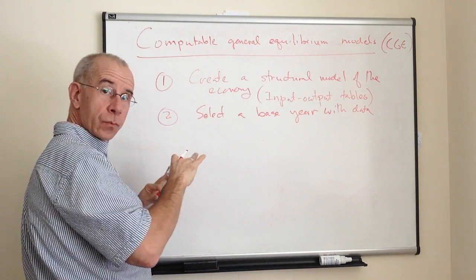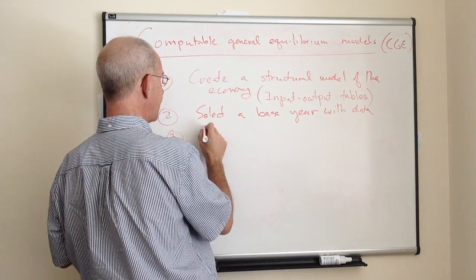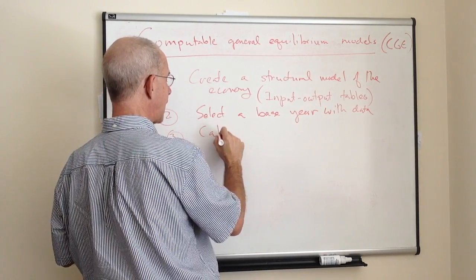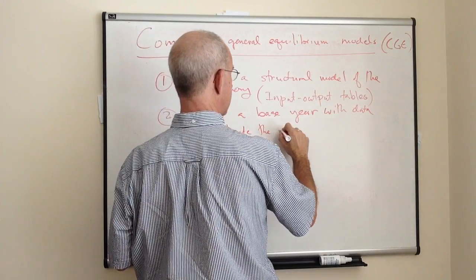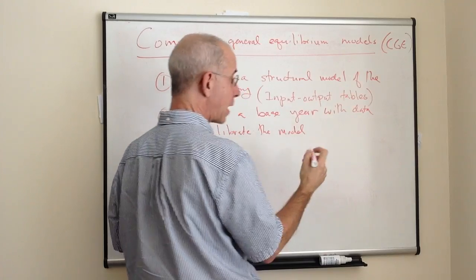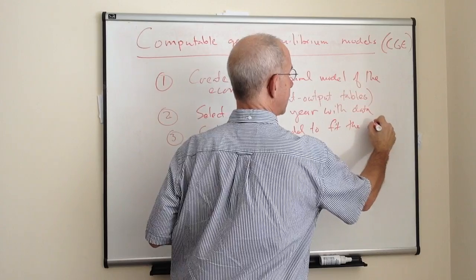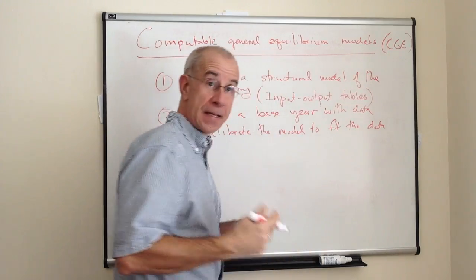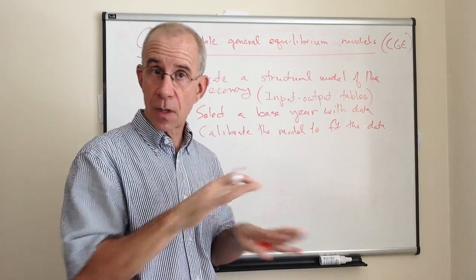So you have a structure, you've got data. And then you will calibrate the model, this structural model, to fit the data. Basically, assuming that you've got an equilibrium, supply-equal-demand across all markets.